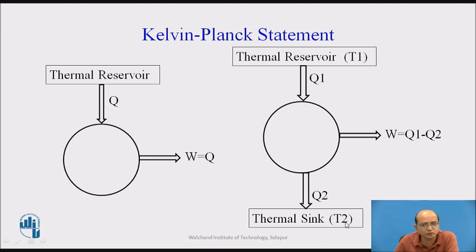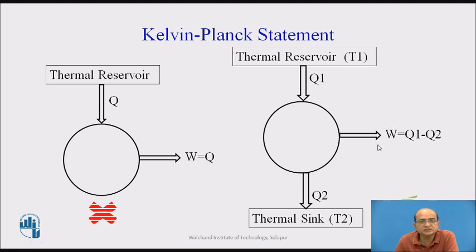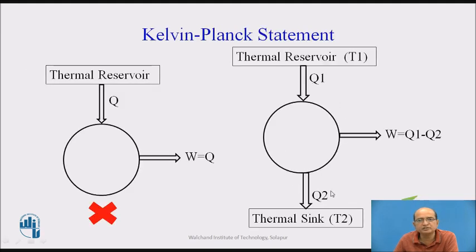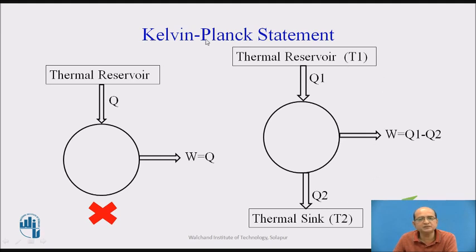The understanding from the Kelvin Planck Statement is that the total amount of heat energy cannot be converted into useful work — a certain amount of heat rejection must always occur. Here Q1 is the heat supplied, Q2 is the heat rejected, and W is the effective work obtained. An engine without heat rejection is impossible to manufacture, whereas engines with heat rejection are possible and are manufactured for many applications — diesel engines, petrol engines, and gas engines — all working on the principle of the Kelvin Planck Statement under the second law of thermodynamics.